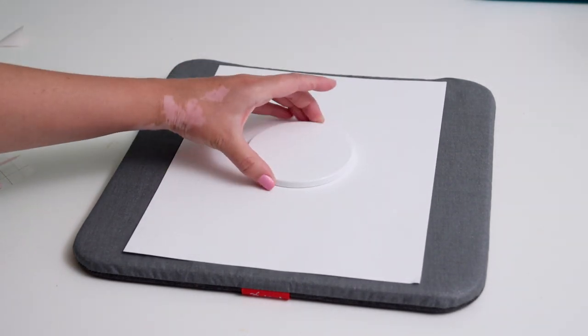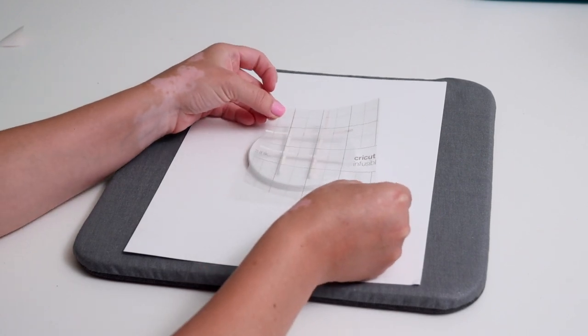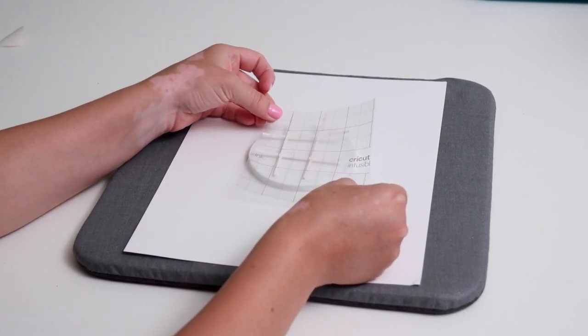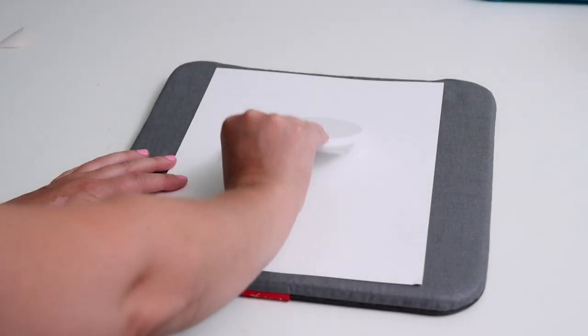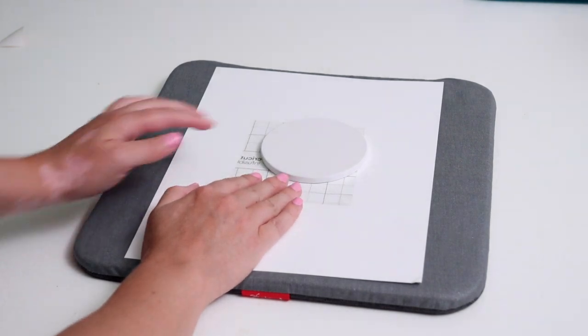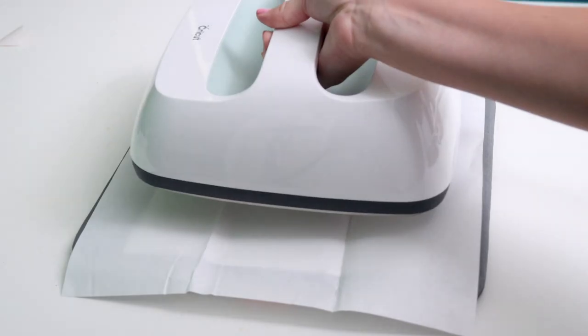I'm using my EasyPress 2 mat and I'm going to put a piece of cardstock down. Then I've got my coaster here - the shiny side is up. I'm going to turn my grid over facedown and put it on the shiny side and try to line it up as best as possible. Once I'm happy with that, I flip it over so it's facedown on the piece of paper and my mat. Then I put a clean piece of butcher paper over top, which comes with the Infusible Ink transfer sheets.